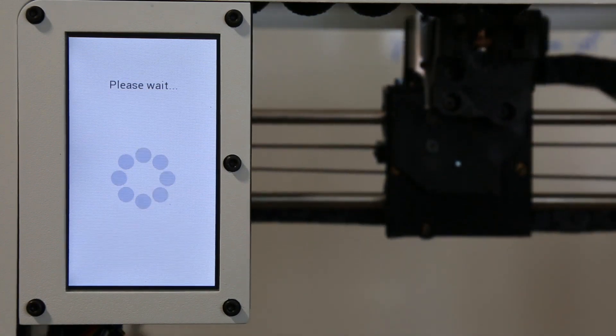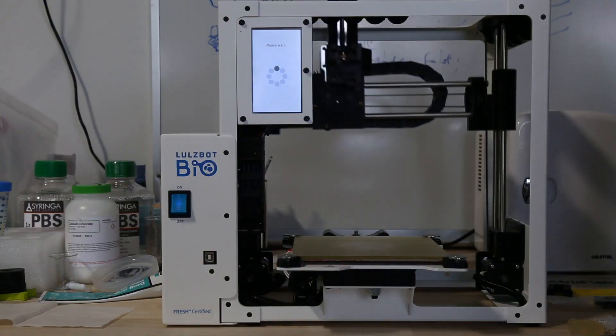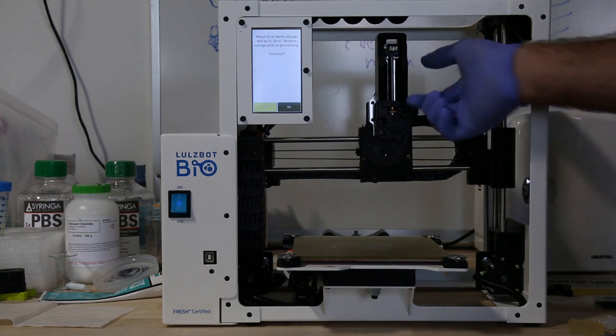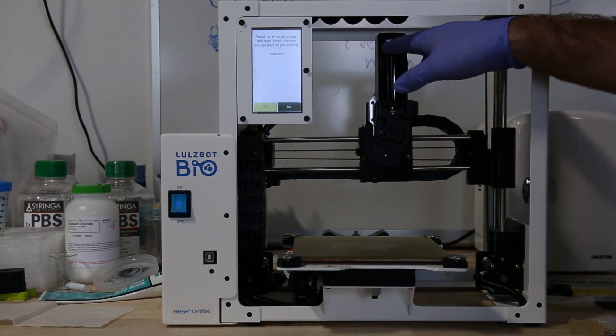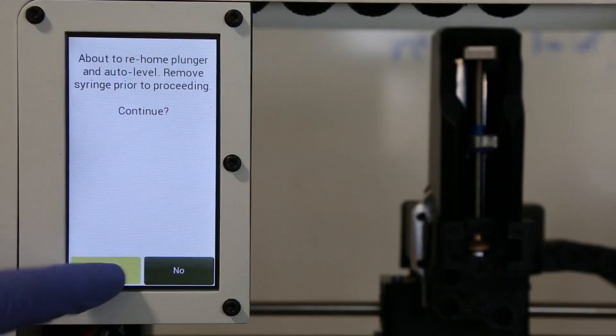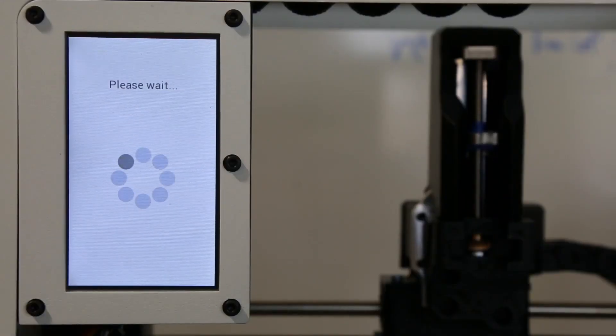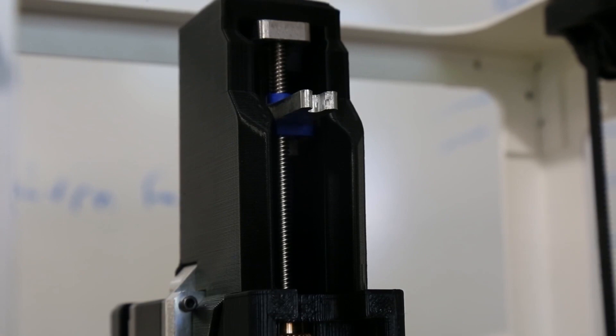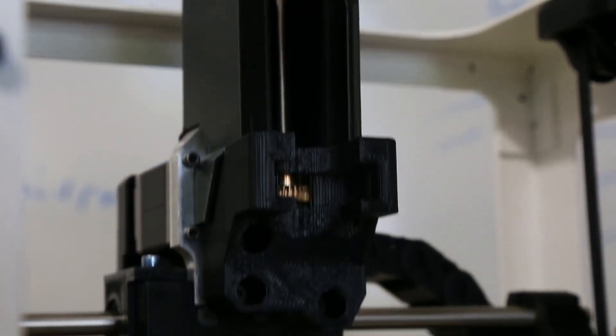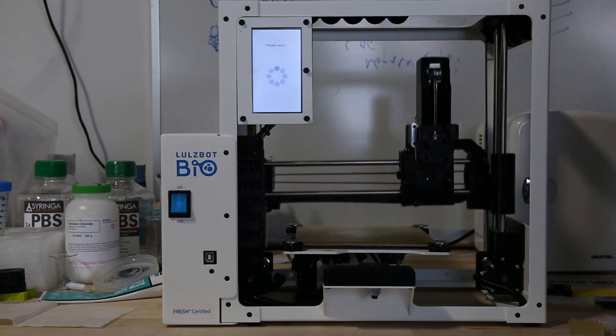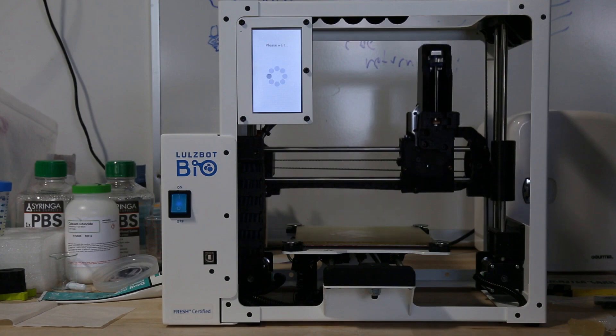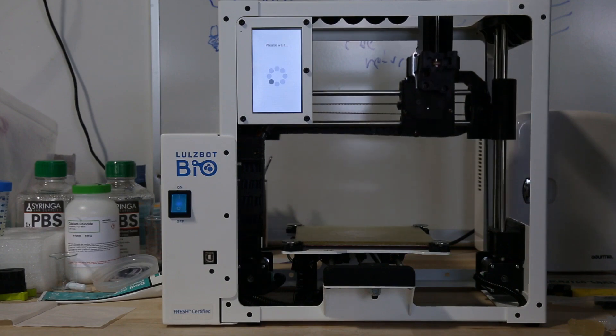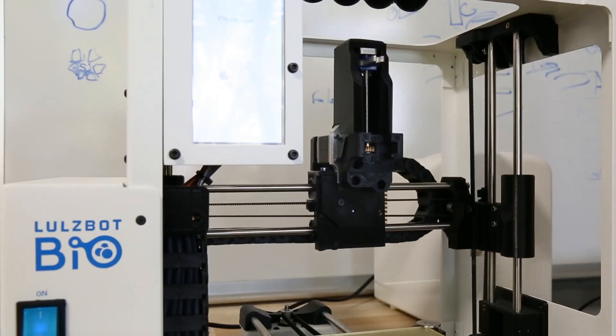And now the carriage is gonna move to the syringe unload or load position. Now if you had a syringe in here you would remove it. After that the machine is gonna level the X gantry and home the plunger to the top. And now the machine is gonna level the X gantry and move to the syringe load position.